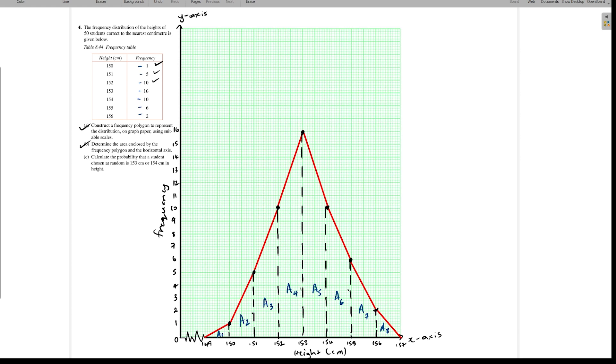Now to calculate the area, we need to look at the shape of each section. Area 1 falls under a triangle. Area 1 would be equal to half base times height. If we look at this triangle here, the base is from 149 to 150, so that's just 1 unit. So it's half times 1, and the height is from 0 to 1, so that's just a half.